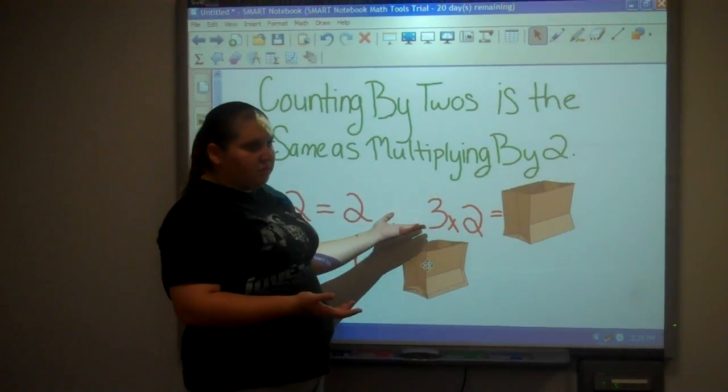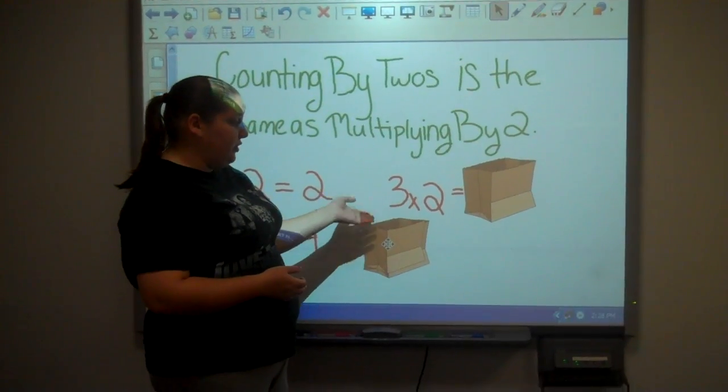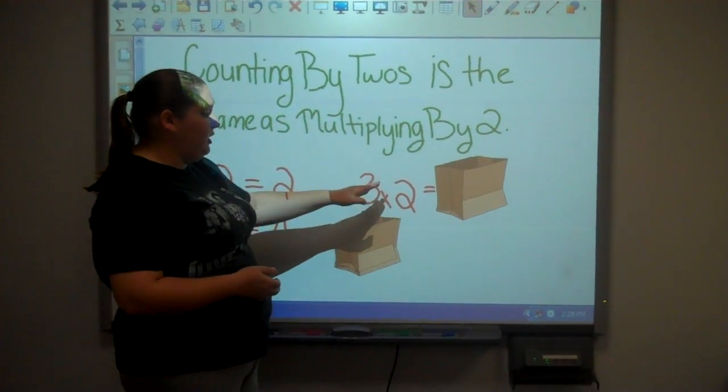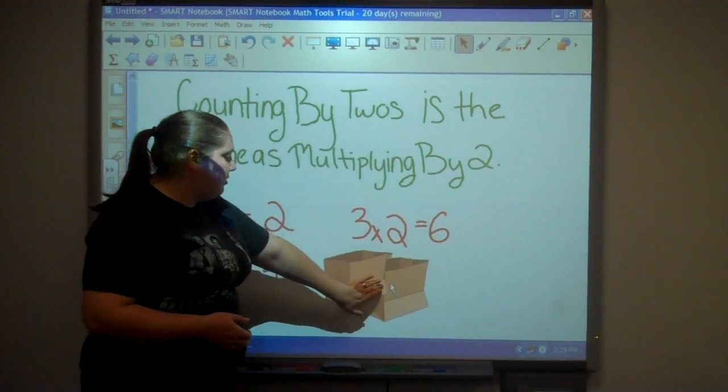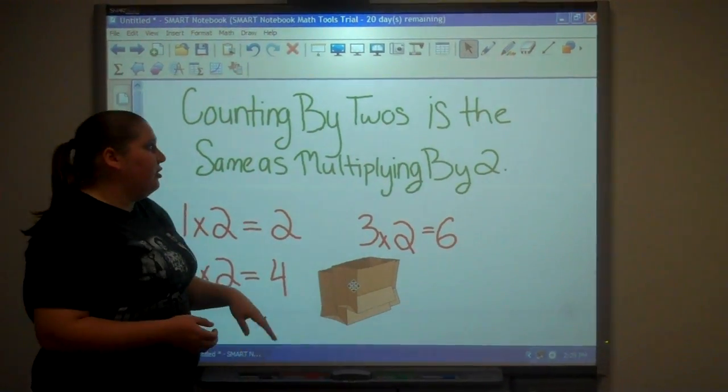We have six frogs, so multiplying by two, it would be three times two is six.